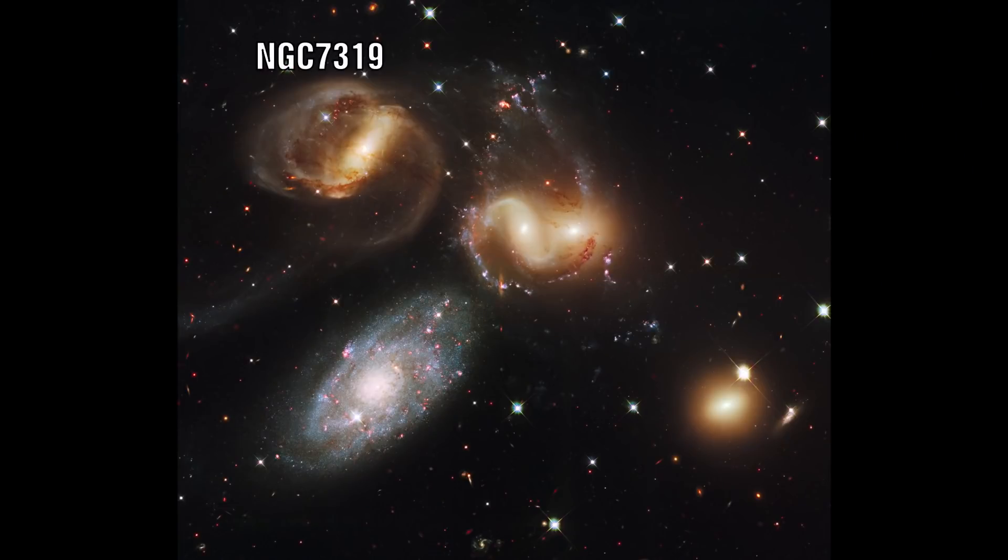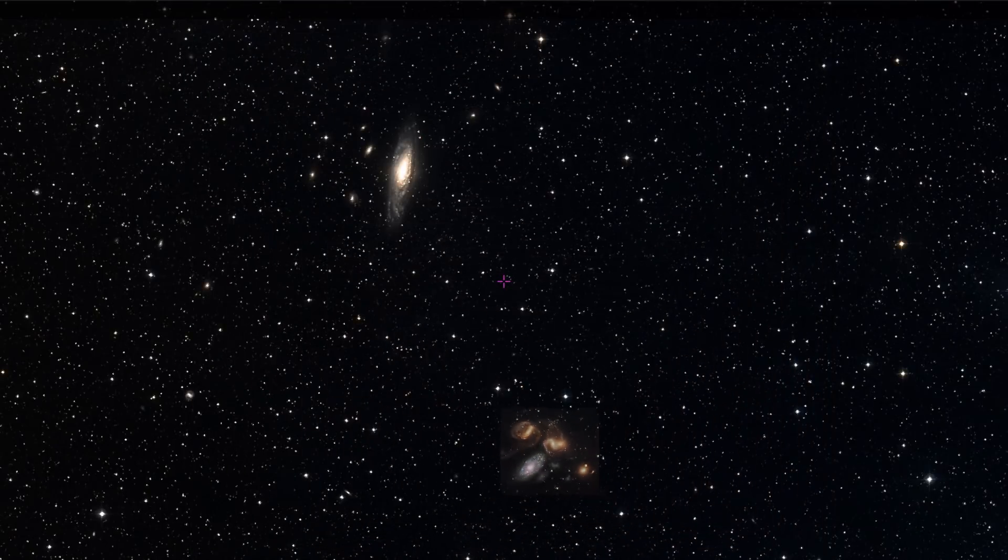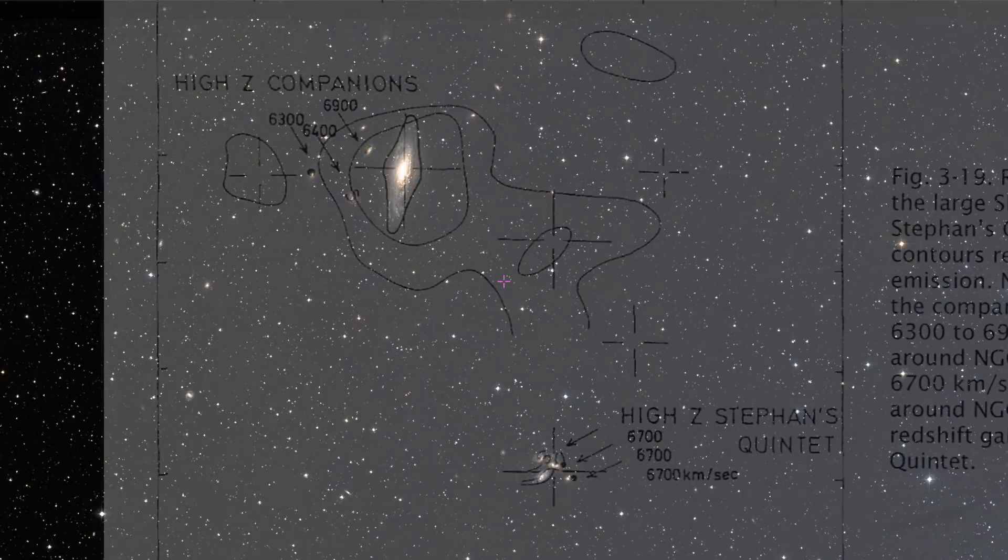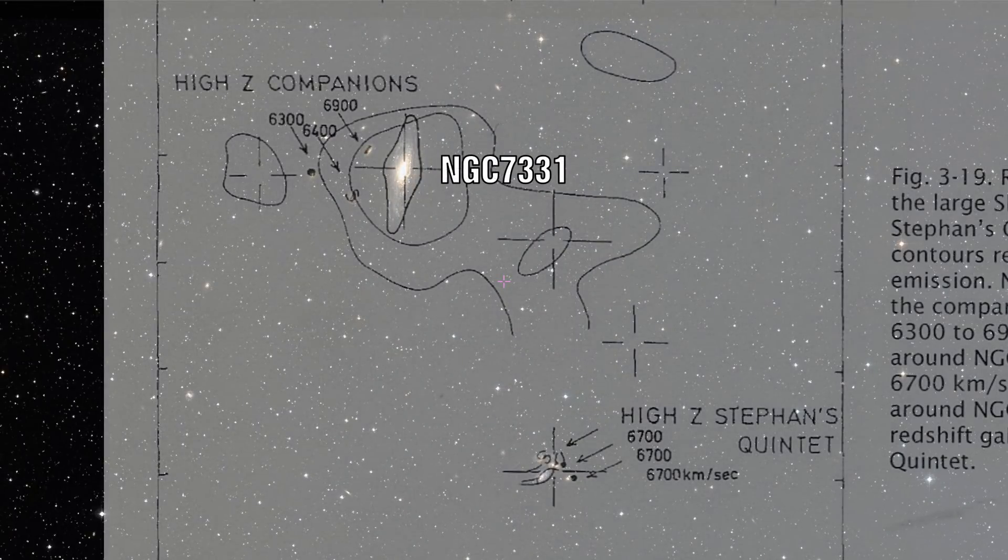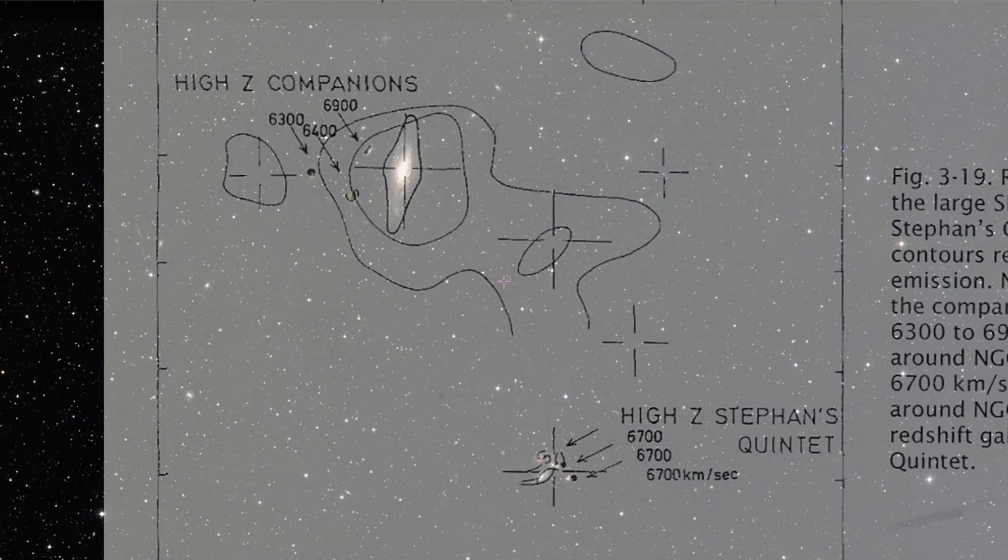NGC 7319 is another example of a high redshift galaxy which must in fact be at the same distance as the low redshift NGC 7331.